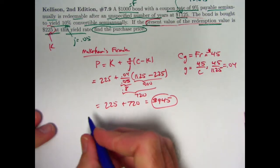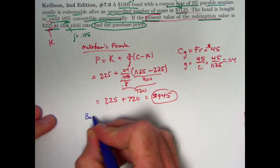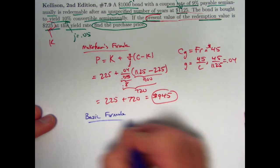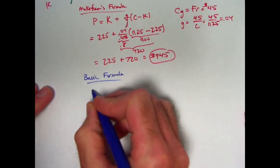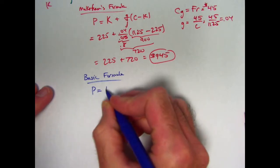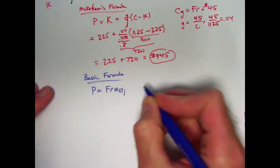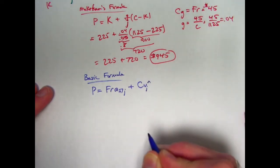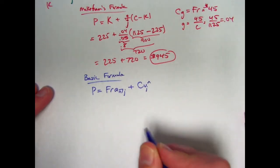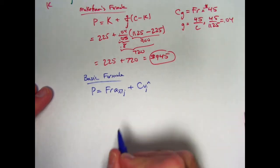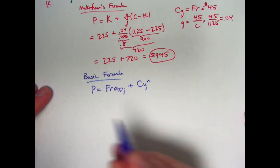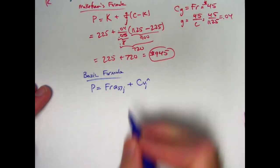All right. What about the basic formula? Is it just as efficient or less so? I think it is a little less efficient. We will see. Basic formula is the price is F times R times a angle n at j plus C times v sub j to the n power. We don't know n. We do know v.